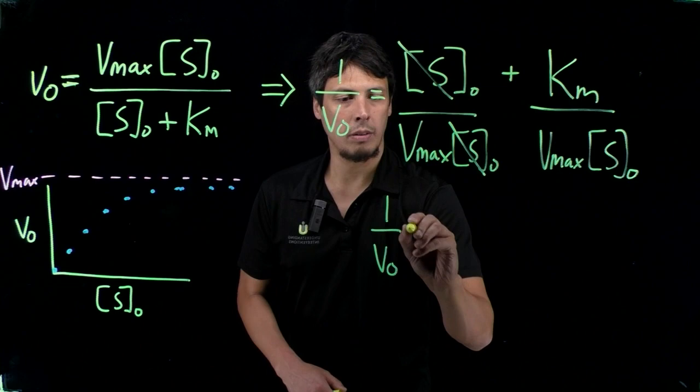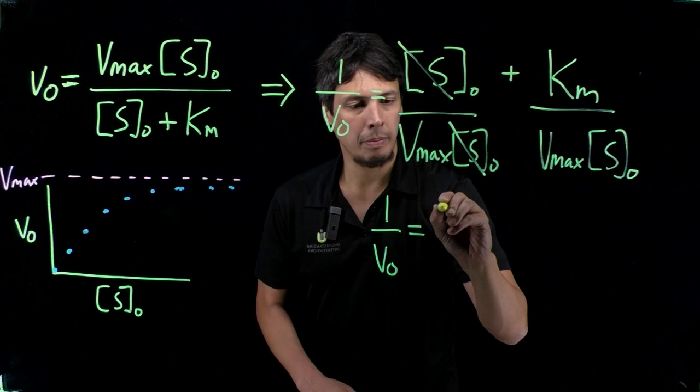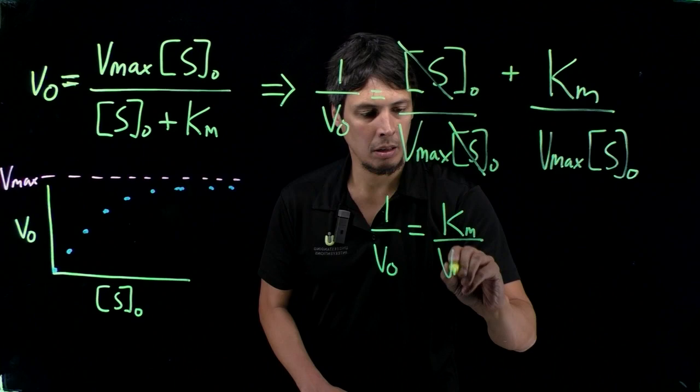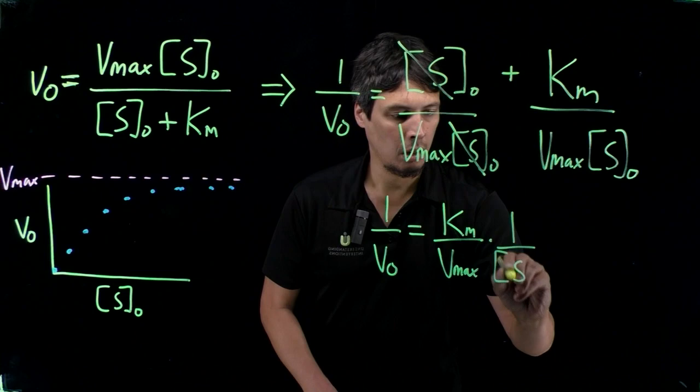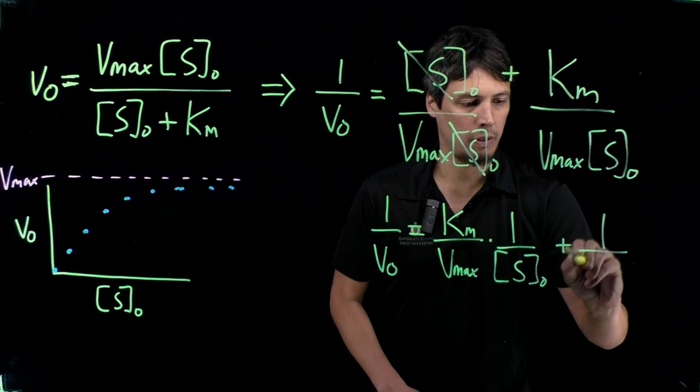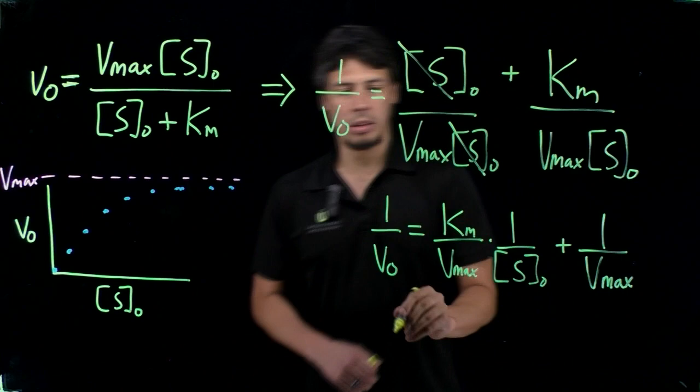We get a final equation of 1 over V-naught equals Km over Vmax times 1 over S-naught plus 1 over Vmax. This is called the Lineweaver-Burk equation.